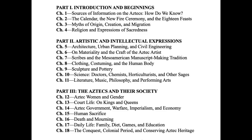These are the 18 lectures that make up this course, subdivided into three groups. Part one: introduction and beginnings. Part two: artistic and intellectual expressions. Part three: the Aztecs and their society. Lecture one will be on sources of information on the Aztecs — how do we know? This is a very significant question, because people think they know the Aztecs. For example, claims that they killed 30,000 people in one day — I'm going to show you the evidence and ask you to question the validity of assumptions we have about earlier peoples.